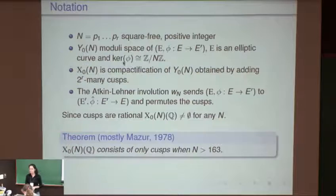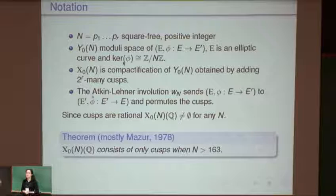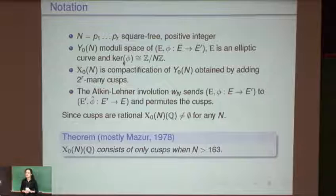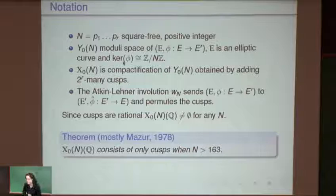Question about rational points: does the isogeny being defined over Q mean the cyclic group is defined over Q? Yes — the isogeny is defined over Q, meaning the kernel, which is a cyclic group isomorphic to Z/NZ, is defined as a group over Q, but not point-wise. If you hit the group by a Galois map σ in the absolute Galois group of Q, you still get back the same group, but the points might be shifted inside the group.